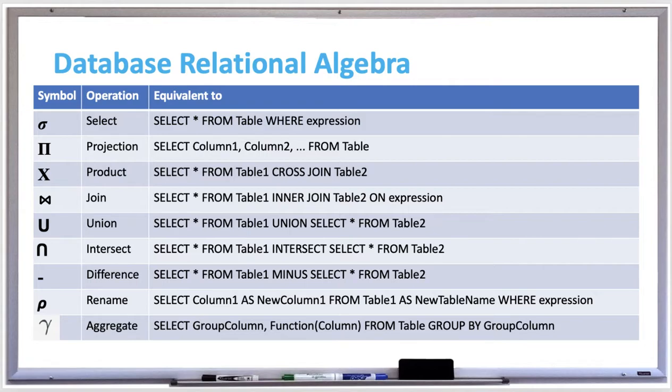Rename operation specifies new table and column names for a table. The aggregate operation applies aggregate functions like sum, min, max, or average to the table.